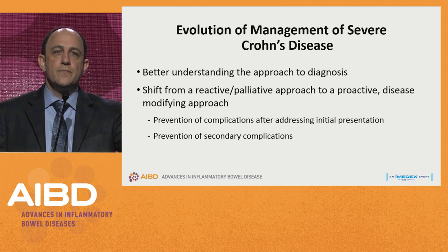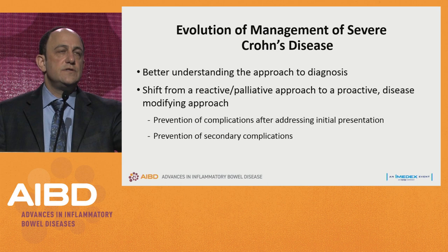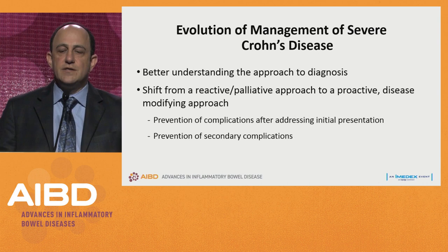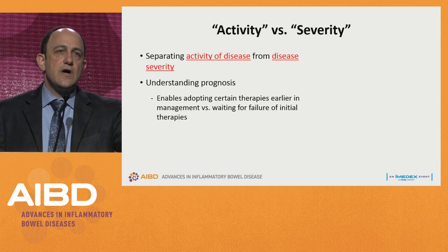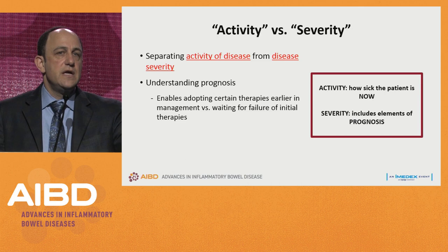We also want to pay attention: once a patient has had one complication, what are we going to do so we don't end up with a second? Understanding that the patient is already declaring themselves and showing us their disease behavior should guide our choice of additional therapies. When we talk about activity and severity — Corey Siegel wrote a very nice piece on this — activity is what the patient's doing right now; severity really includes more of their prognosis.